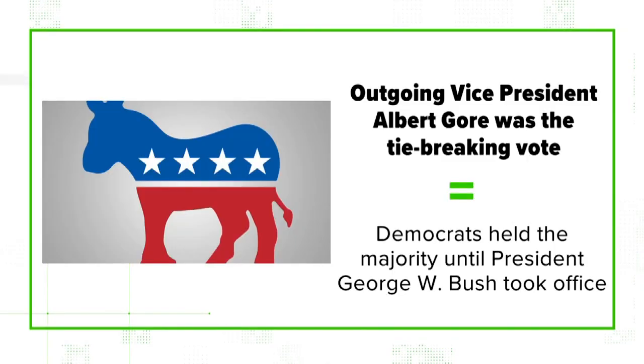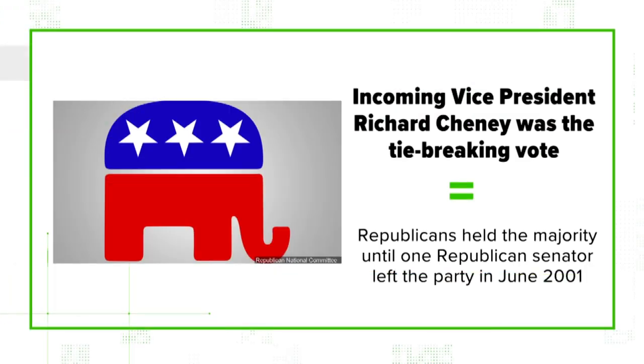That's the time that most people look back to as setting the precedent for what's going to happen this time. After the 2000 election, Democrats held a majority in the Senate with then-Vice President Gore's tie-breaking vote. Then, after President Bush was inaugurated in 2001, Republicans held the majority with Vice President Cheney's vote. It just came down to whoever's party had the vice presidency.